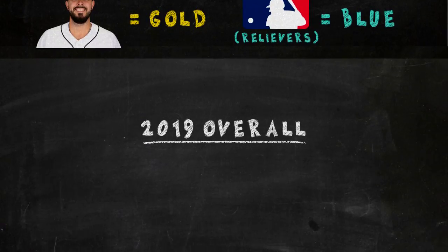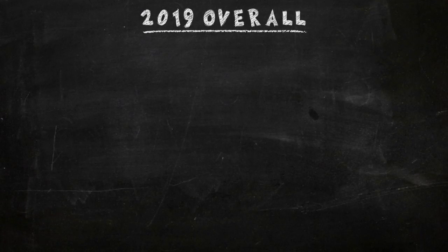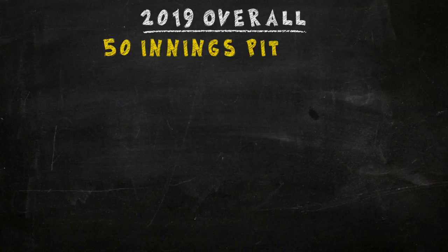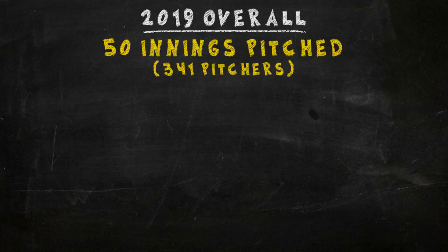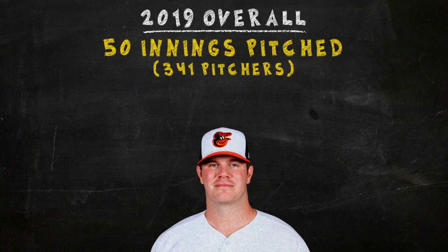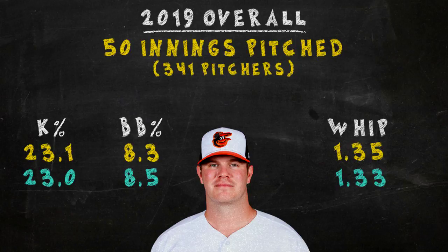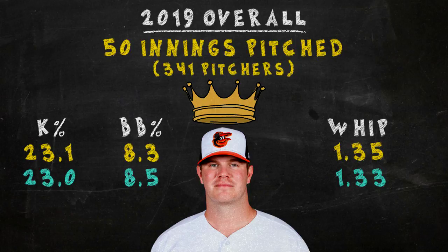We need to determine the most average pitcher of 2019, regardless of usage. Looking at all pitchers with at least 50 innings pitched, we end up with 341 names. And our pick was just Dylan Bundy again. Compared to the MLB average for all pitchers, his strikeout rate, walk rate, and WHIP were essentially spot on. So congrats to you, Bundy — you're our 2019 most average pitcher.